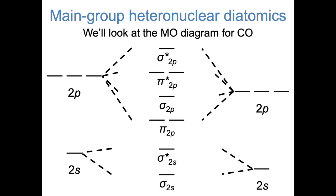First of all, notice that the pi bonding orbitals consisting of 2p are lower in energy than the sigma bonding orbital. This is something that we actually saw in the previous video for diatomic nitrogen. When one or both of the elements are relatively far to the left in the periodic table, these pi bonding orbitals tend to be lower than sigma. Also, notice the way that I've named the molecular orbitals — I no longer refer to them as g or u. Because it's a heteronuclear diatomic molecule and it's no longer symmetric from end to end, the orbitals are not truly even or odd. So instead, I name them things like sigma and sigma star and refer to the atomic orbitals that they came from. We'll see the asymmetry of these orbitals in pictures in just a minute.